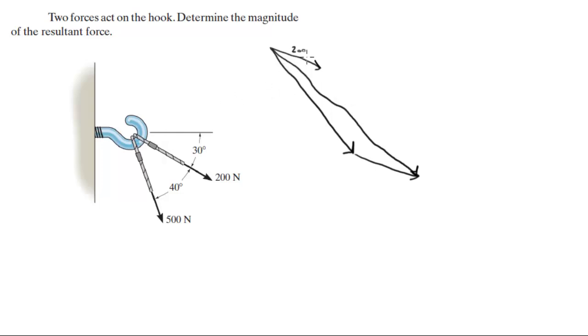Now we know that this angle right here with the X is 30 degrees and this angle right here is 40 degrees.